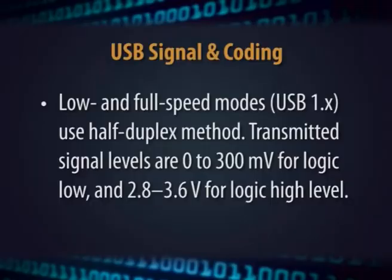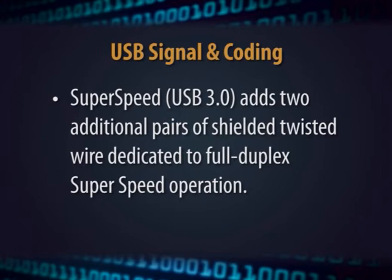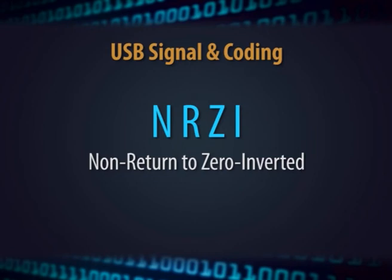In low and full speed modes, USB 1.x uses half-duplex. Transmitted signals are 0 to 300 millivolt for logic low and 2.8 to 3.6 volts for logic high. High speed mode USB 2.0 uses the same wire pair but with different electrical conventions: 0 to 10 millivolt for logic low and 360 to 440 millivolt for logic high. Super speed USB 3.0 adds two additional pairs of shielded twisted wire dedicated to full-duplex super speed operation. USB uses a combination of NRZI and bit stuffing to encode bits sent across the wire. NRZI means non-return to zero inverted.